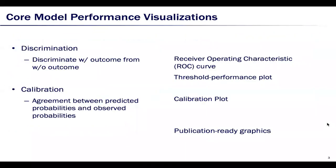In Runway, we provide three core visualizations of two different aspects of model performance. Model discrimination refers to the ability of the model to discriminate or separate samples with the outcome from those who do not have the outcome.